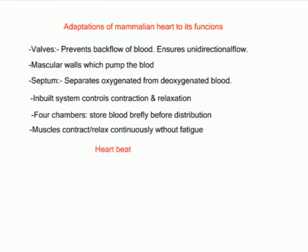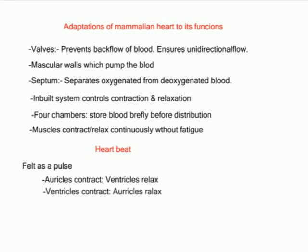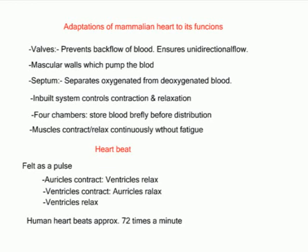The heartbeat is felt as a pulse — a series of waves of dilation passing along the arteries caused by pressure of blood pumped from the heart through contractions of the left ventricle. The heartbeat takes place in steps: first the auricles contract while ventricles relax; next the ventricles contract while auricles relax; then the ventricles relax and the cycle is complete. A complete cycle takes less than one second. The human heart beats approximately 72 times per minute at rest, but can increase to 200 times per minute during exercise, fever or emotional disturbances.